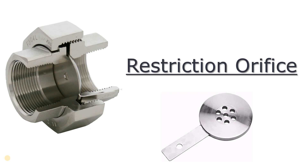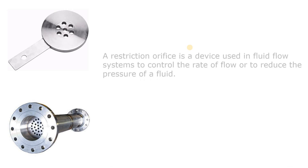Hello everyone. In this video we are going to discuss about the restriction orifice, which is also known as the RO. This is one of the most important instruments used in the pipeline to drop the pressure of the downstream section, to restrict the flow. You could see this RO in the vent line as well as in the recirculation line of the pump, or minimum recirculation flow line.